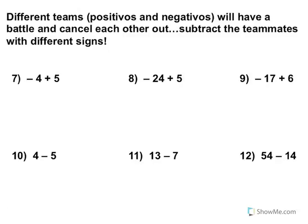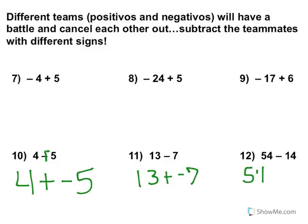Here we have battles. Every single math problem here, seven through twelve, the signs are different. So whoever has the bigger number, that sign will win. For example, number ten: I could do four plus negative five — we call it adding the opposite. We make the plus sign and we make the five negative. Adding the opposite, it's called. Same thing with eleven: thirteen plus negative seven. You could rewrite it as well. Press pause so that you can solve problems seven through twelve.